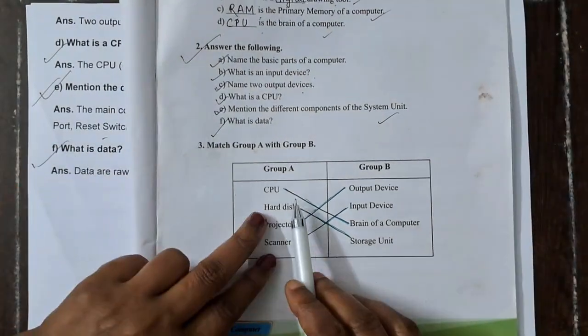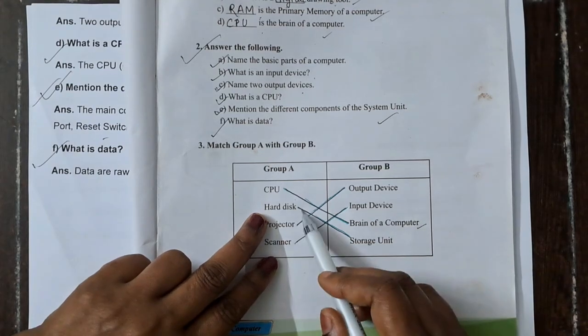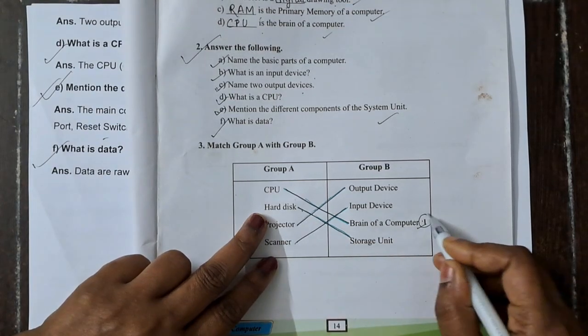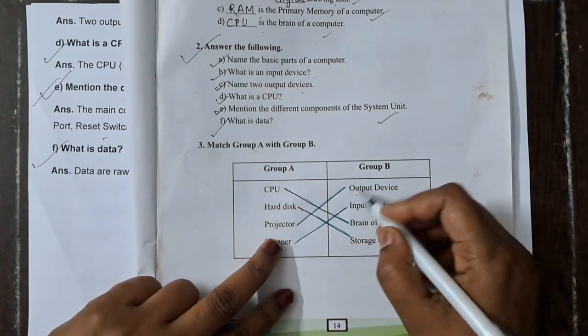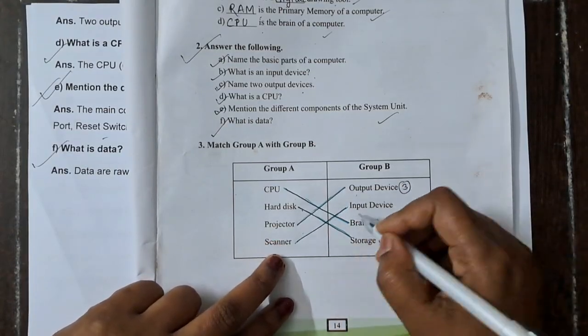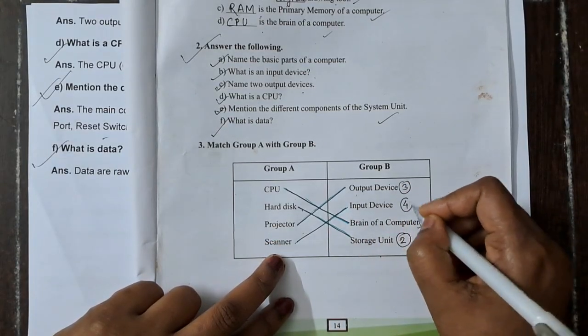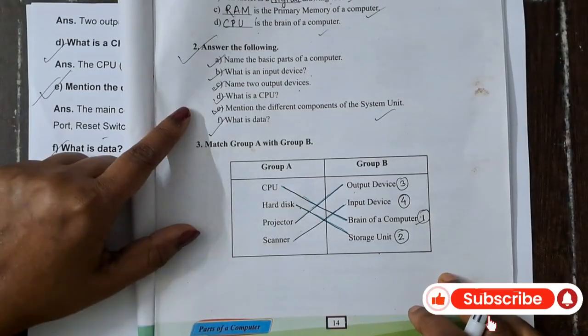Last question number 3, matching: CPU - brain of the computer, Hard disk - storage unit, Projector - output device, Scanner - input device.